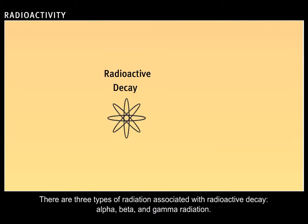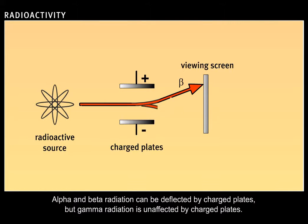There are three types of radiation associated with radioactive decay: alpha, beta, and gamma radiation. Alpha and beta radiation can be deflected by charged plates, but gamma radiation is unaffected by charged plates.